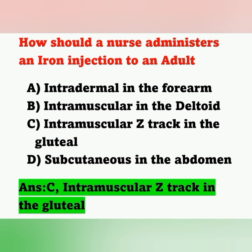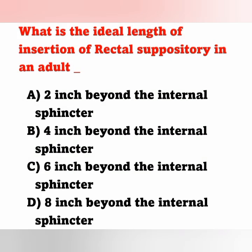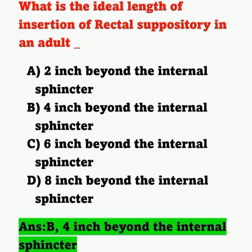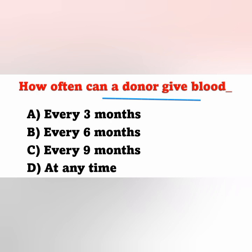Question 7: What is the ideal length of insertion of a rectal suppository in an adult? Options: A) 2 inches, B) 4 inches, C) 6 inches, D) 8 inches — all measured beyond the internal sphincter. The correct answer is option B — 4 inches beyond the internal sphincter.